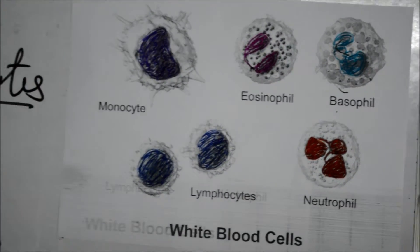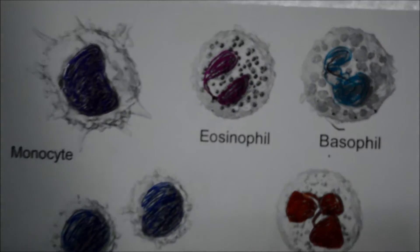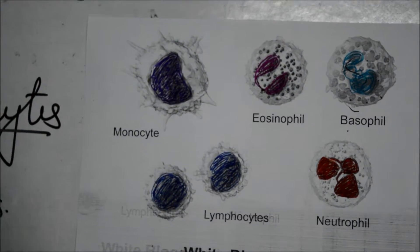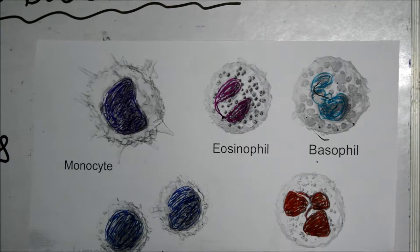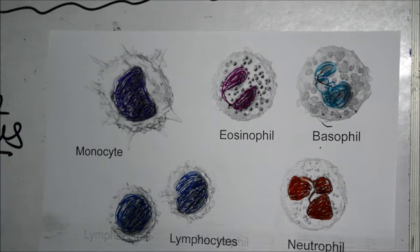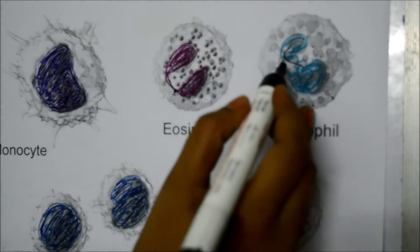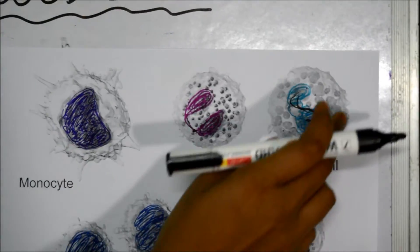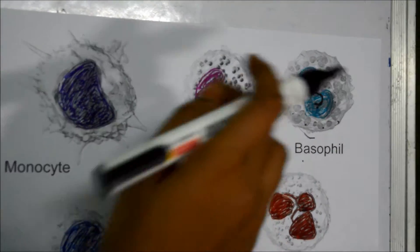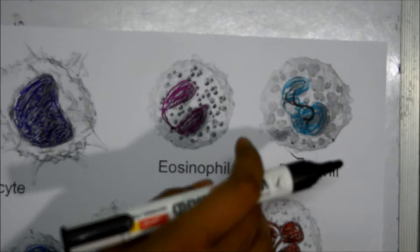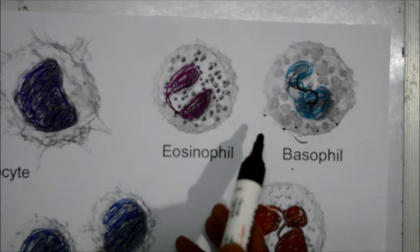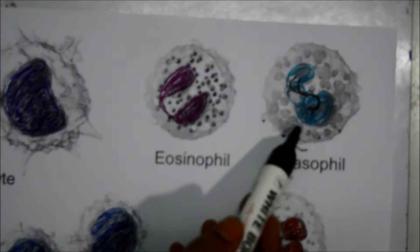Now let us see about the basophils. This is the second type of granulocyte. These cells can be stained with basic dyes, hence they are called basophils. In these cells the nucleus is S-shaped, and the cytoplasm has round, large, but few granules inside. These cells are phagocytic in nature and play a part in the healing process. Compared to all white blood cells, these are very few in number.